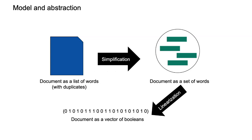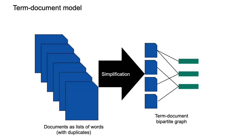We went from lists of words to sets of words — this is an assumption we're making. In coming weeks we might use bags or lists. With sets of words, you can view a document as a vector of booleans: either a term is in the document or it's not. Every position in that vector is one term — maybe the first is 'information' (zero, not in the document), the second might be 'retrieval' (one, it is in the document). So every document is a vector of booleans.